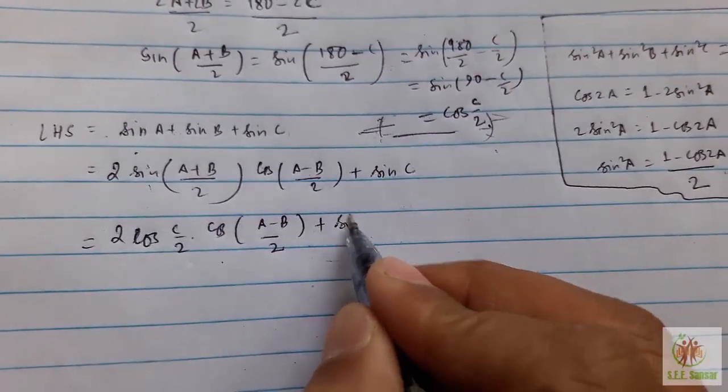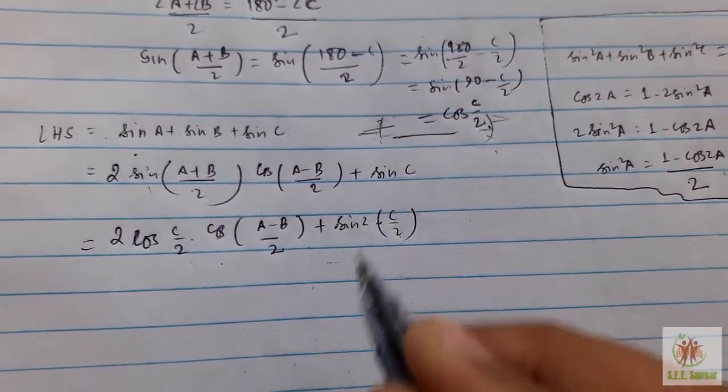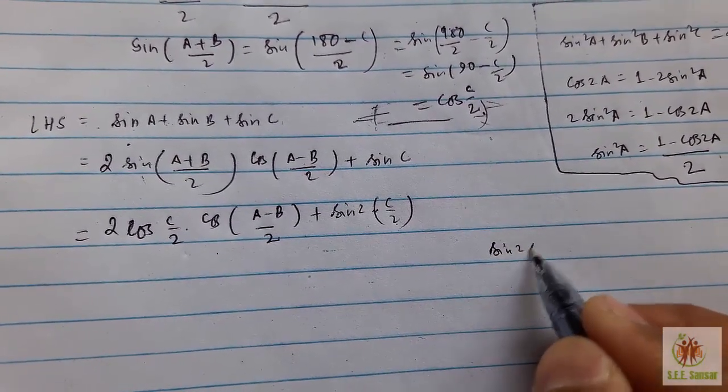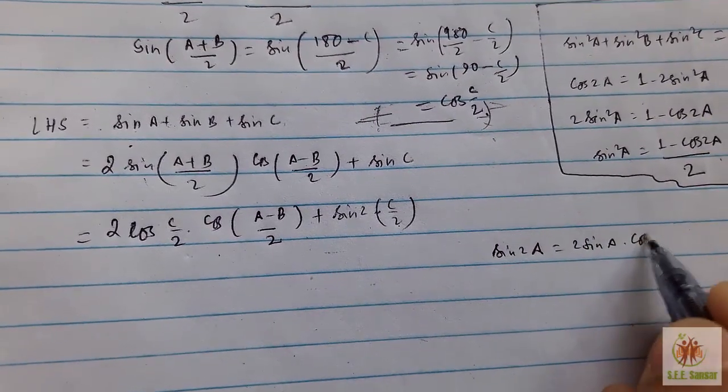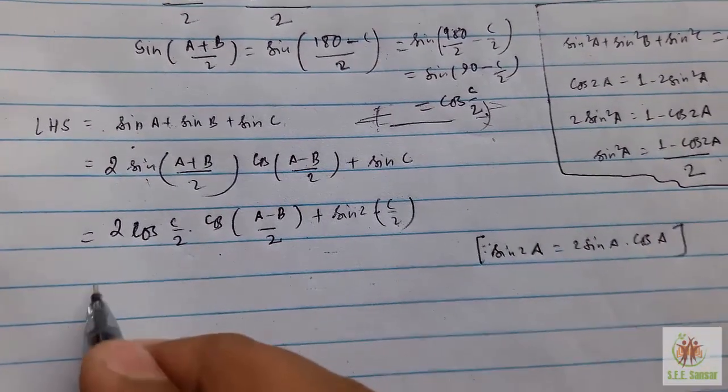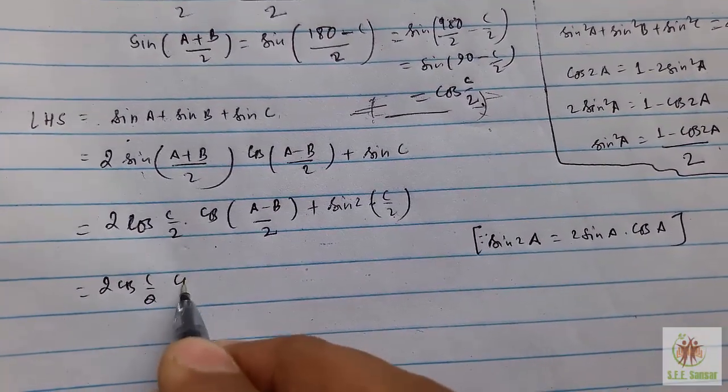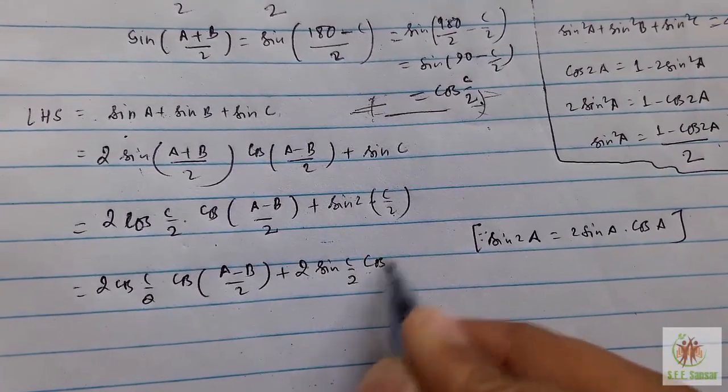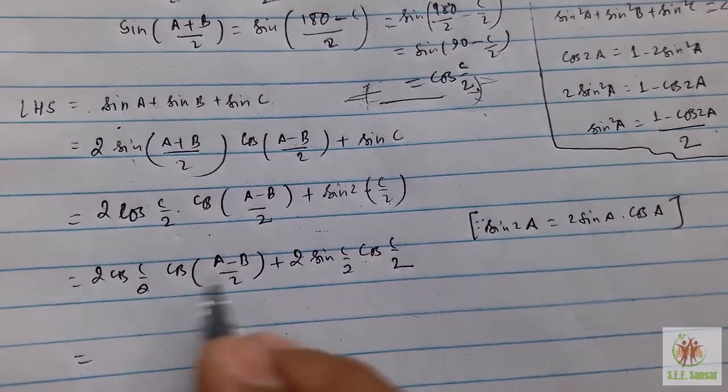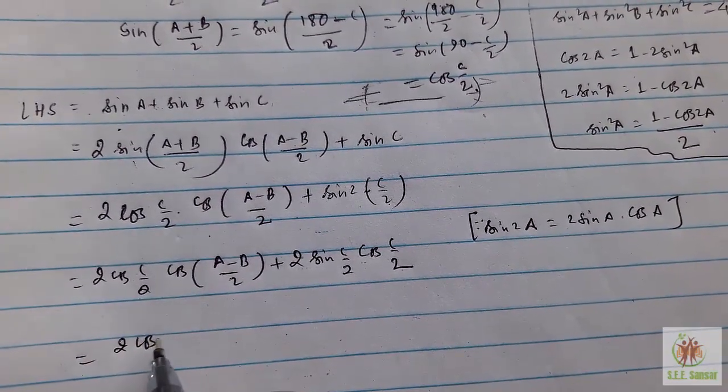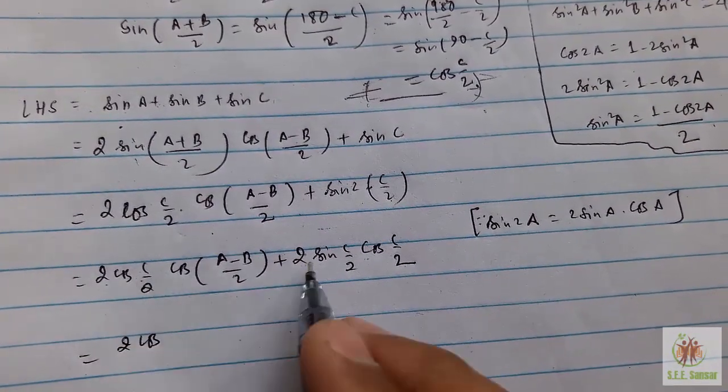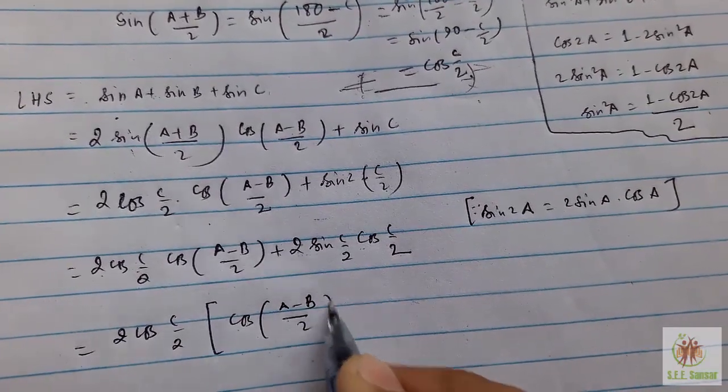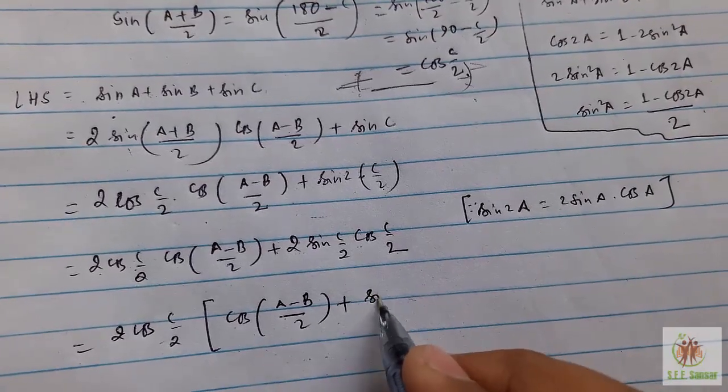So we can write cos(C/2) times cos((A-B)/2) plus 2sin(C/2)cos(C/2). Now use the formula of sin 2A: 2sin(C/2)cos(C/2). Take 2cos(C/2) common: 2cos(C/2)[cos((A-B)/2) + sin(C/2)].